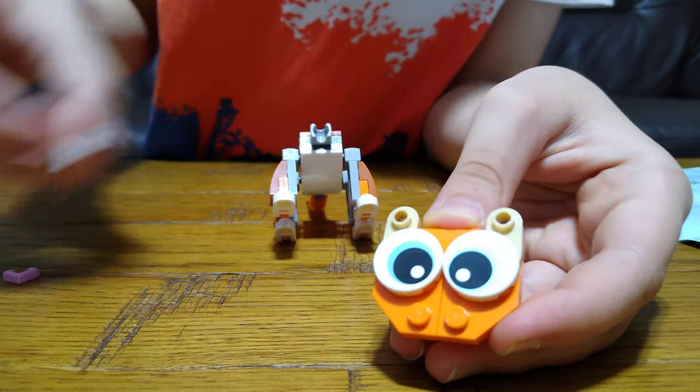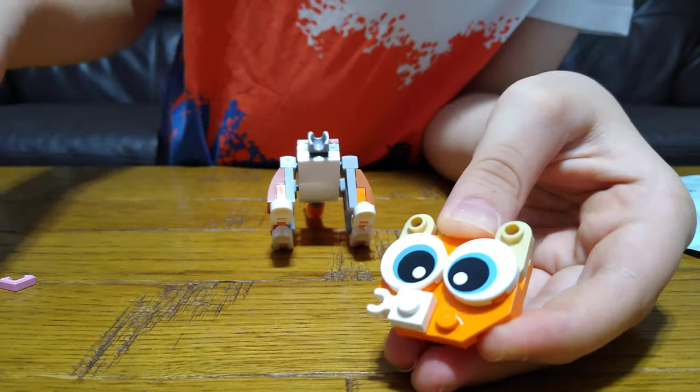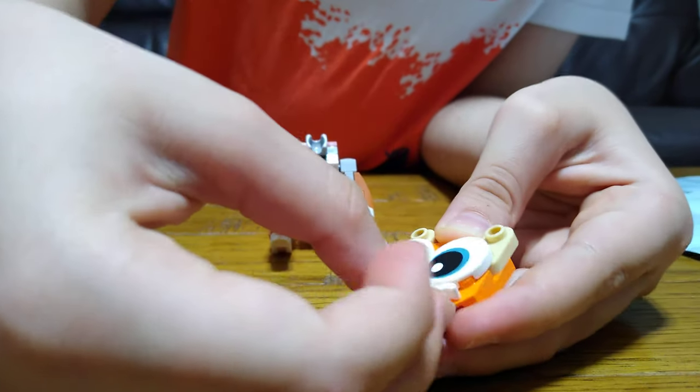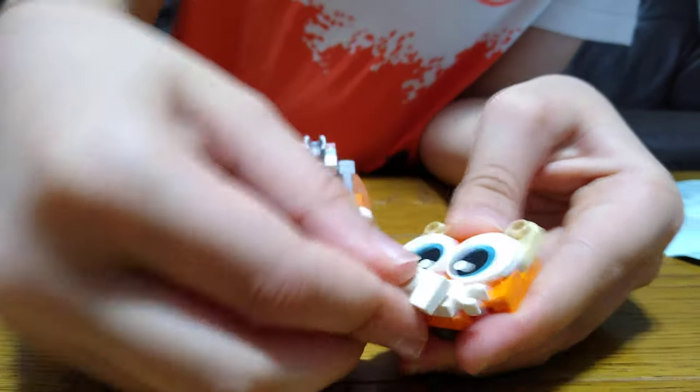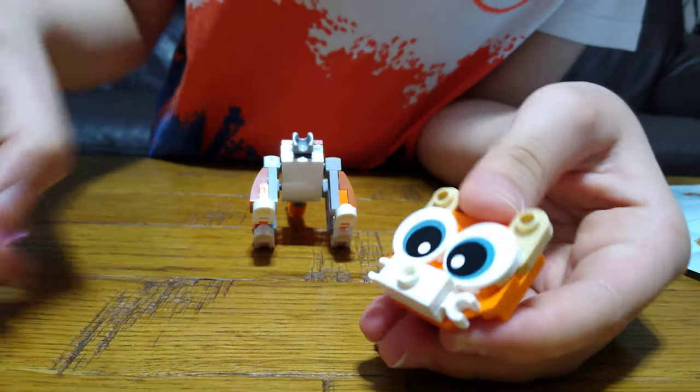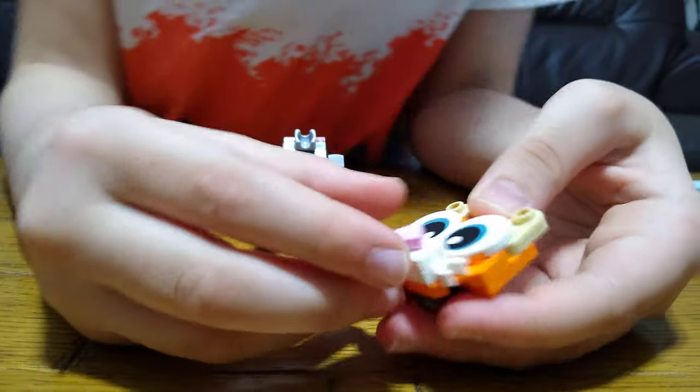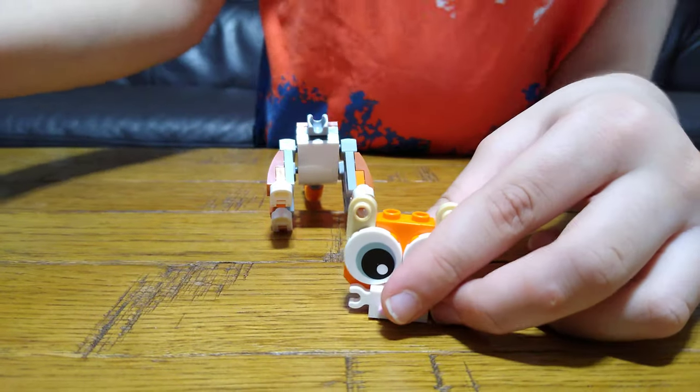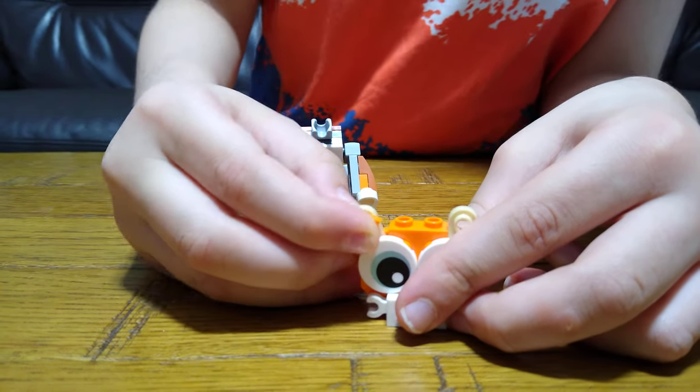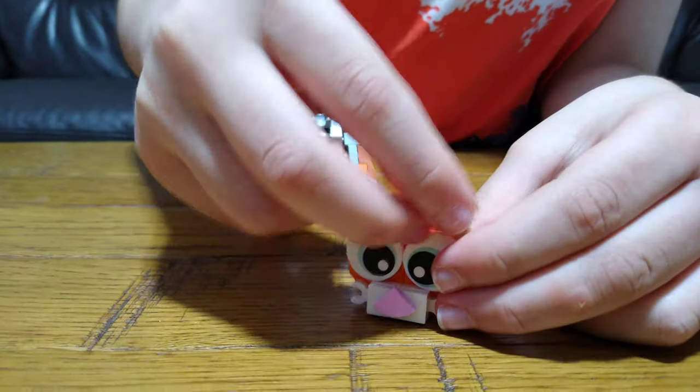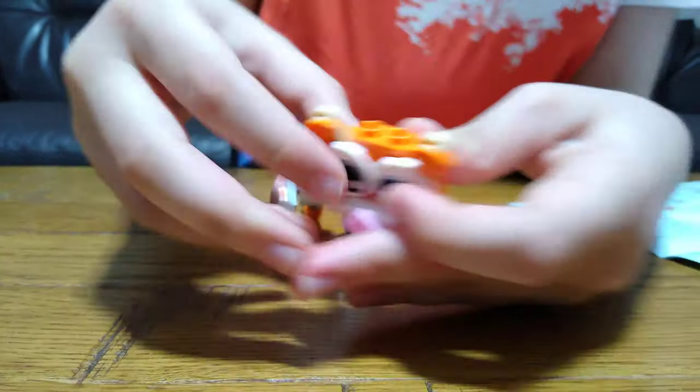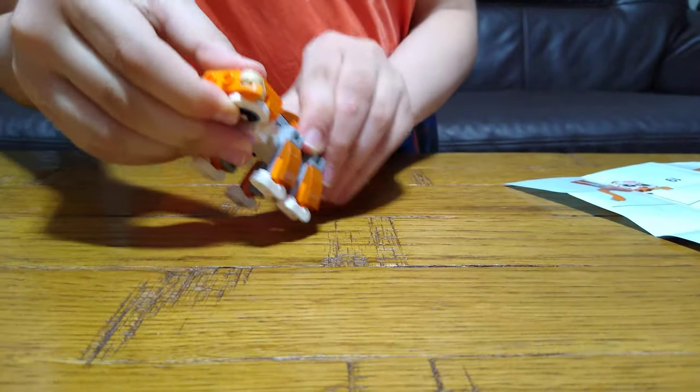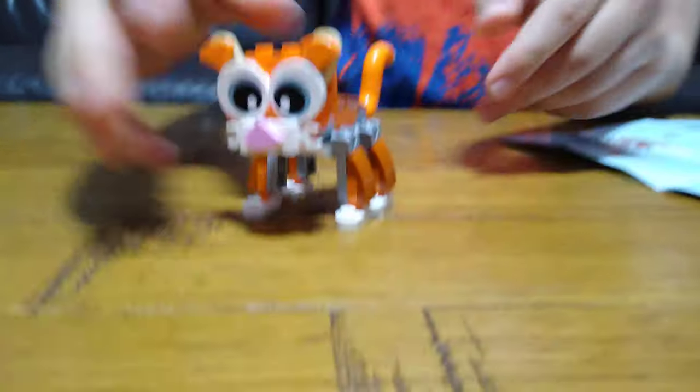And then we need to place two of these for the whiskers, and then this for the mouth, I mean the nose. And then these two for the ears, like that, place the head on, now we are finished.